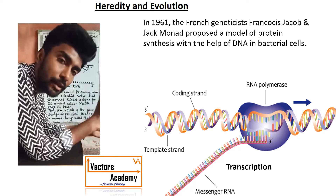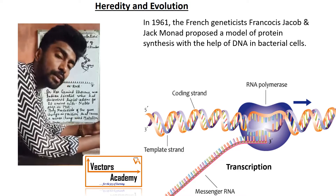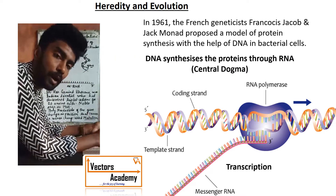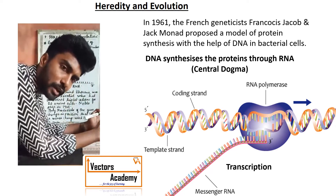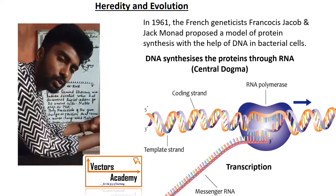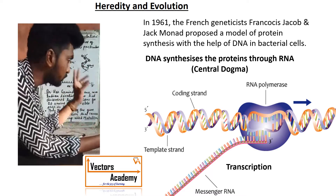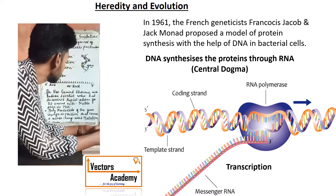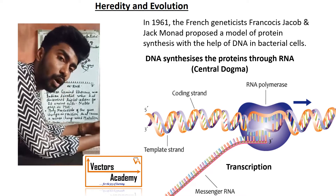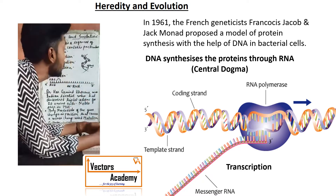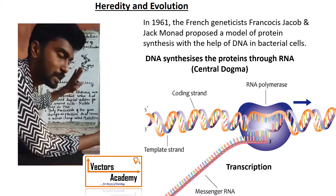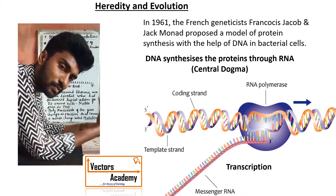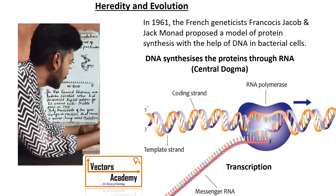The protein synthesis information is generally stored in DNA, and the synthesis of protein is done by DNA through RNA. This process is called central dogma. DNA is the storehouse of protein information, but the synthesis of protein is done by DNA through RNA. The stored information is always with the DNA.